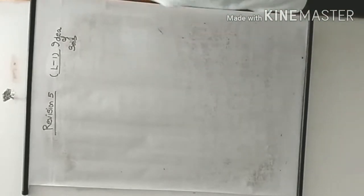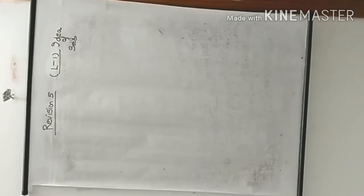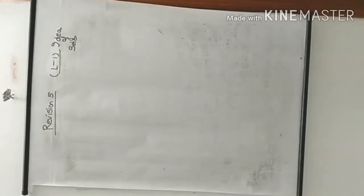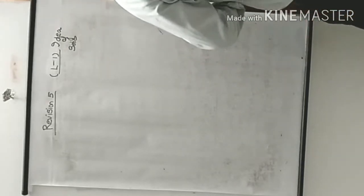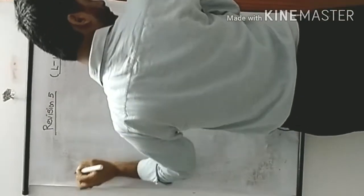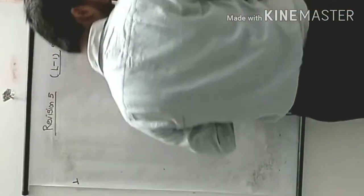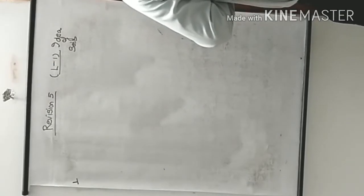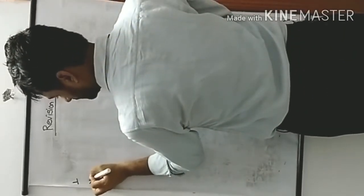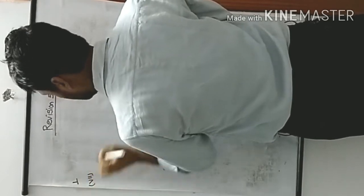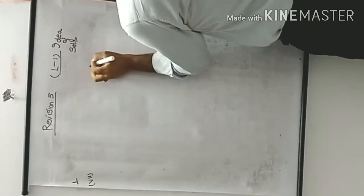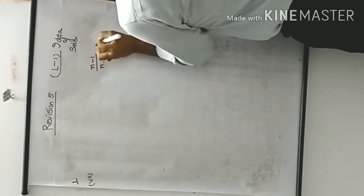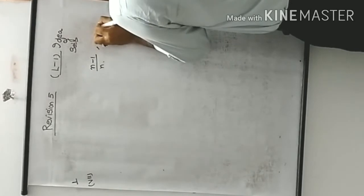Now I am taking some questions from exercise 1B — this is all revision. First question, I am taking part 7 because it looks like a tough part. We need to determine if the set is finite or not, without writing all elements.